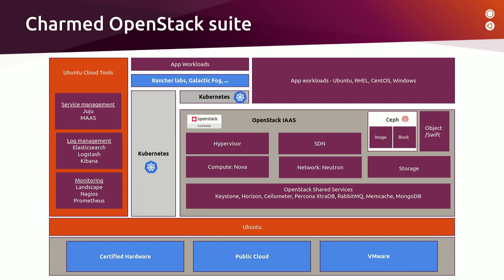Those tools consist of three main components: service management, log management, and monitoring. For service management, we use MAAS — Metal as a Service — a server provisioning tool that allows you to automate bare metal provisioning, and Juju, the application modeling tool, which allows you to deploy and operate your OpenStack cloud in an efficient and flexible way. For log management, we recommend the ELK stack — Elasticsearch, Logstash, and Kibana. For monitoring, you can use Landscape, Nagios, and Prometheus.